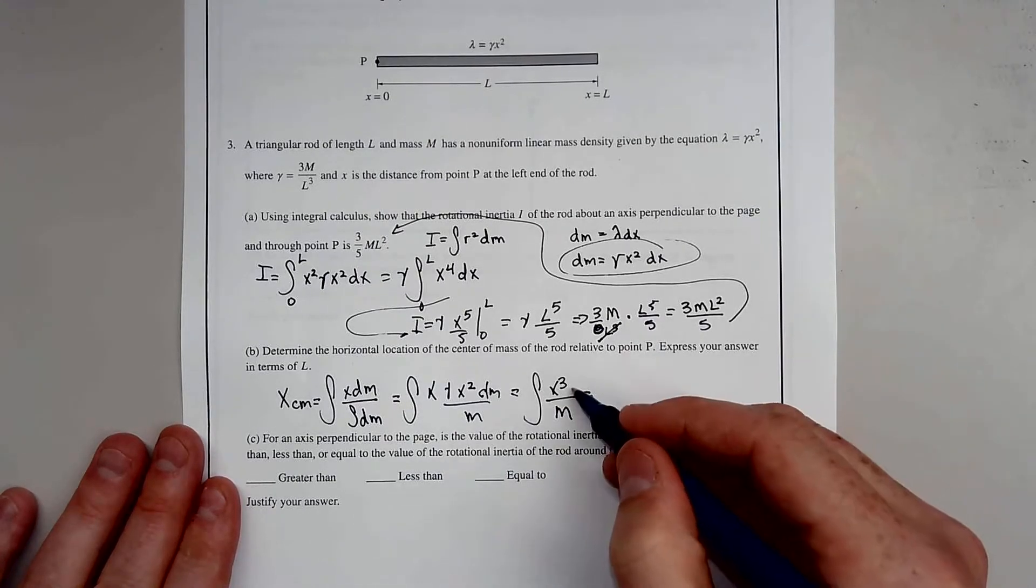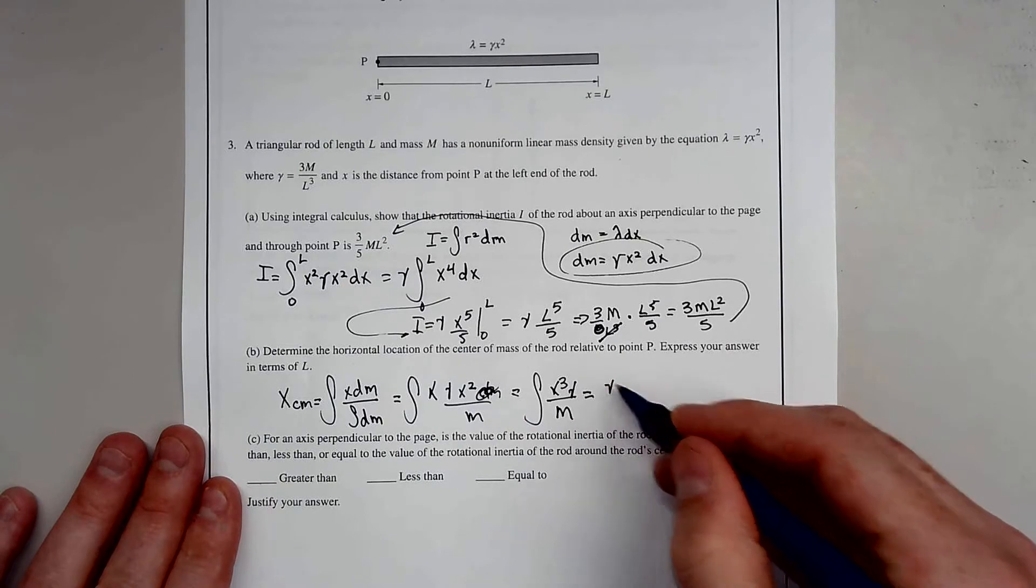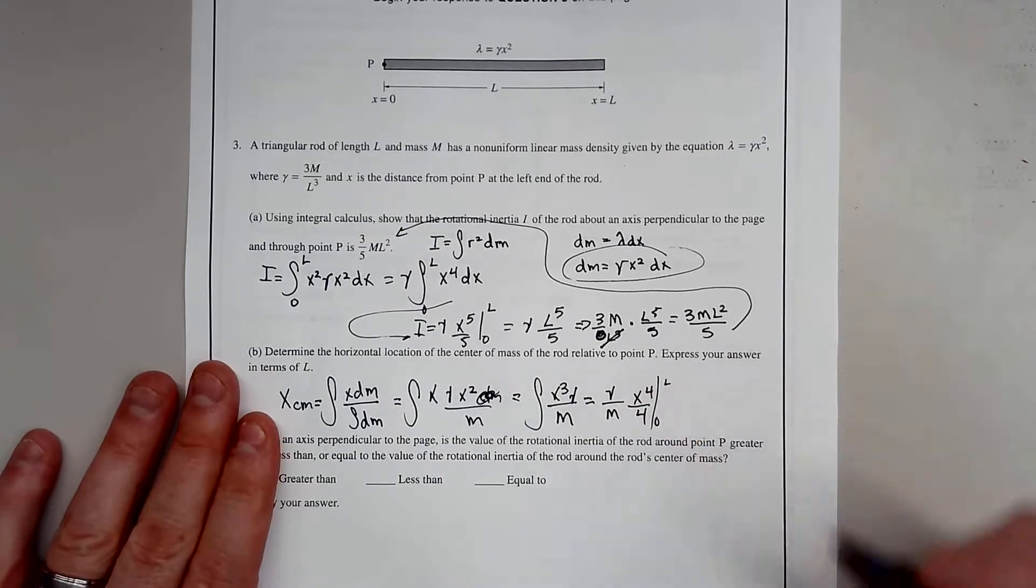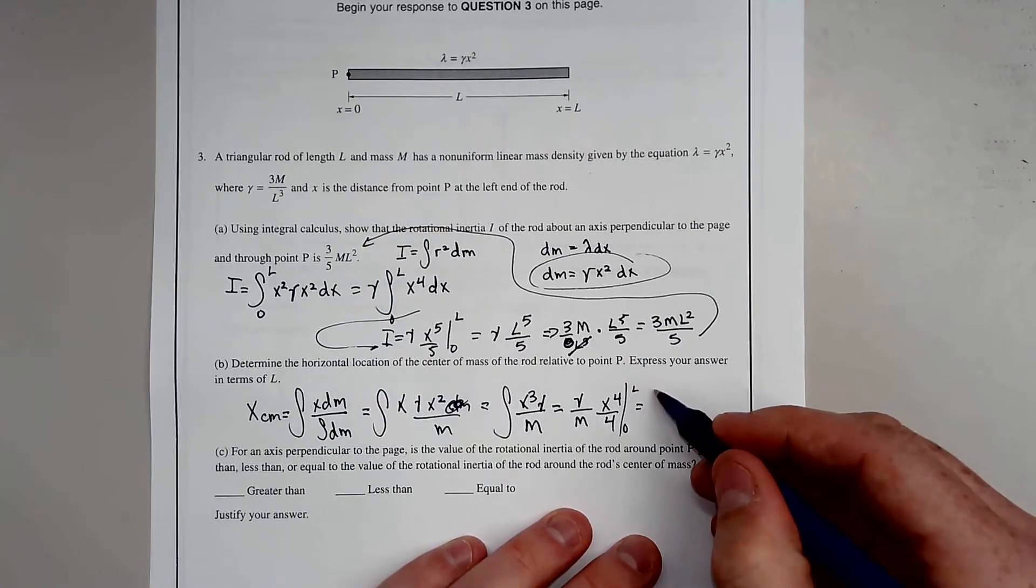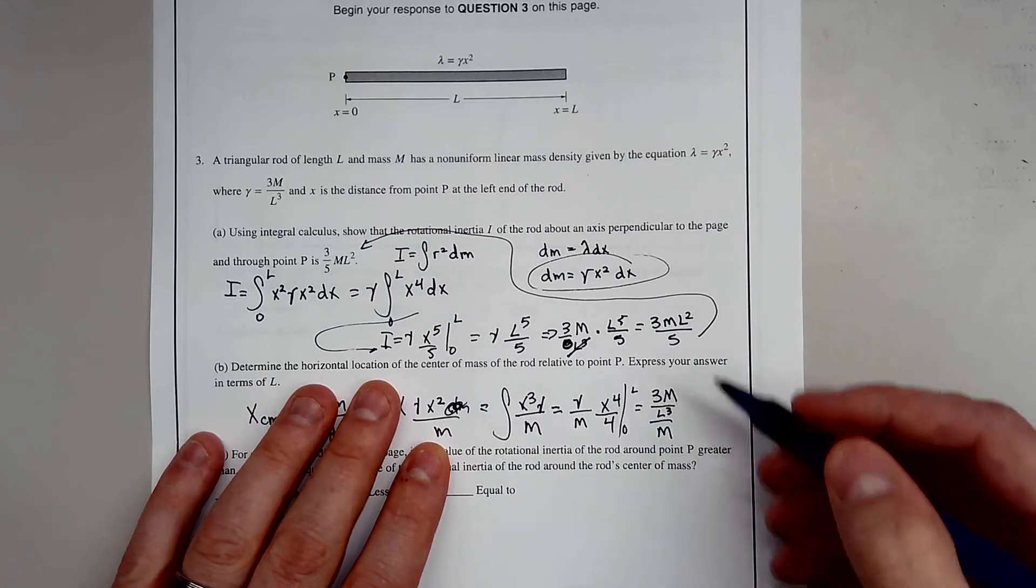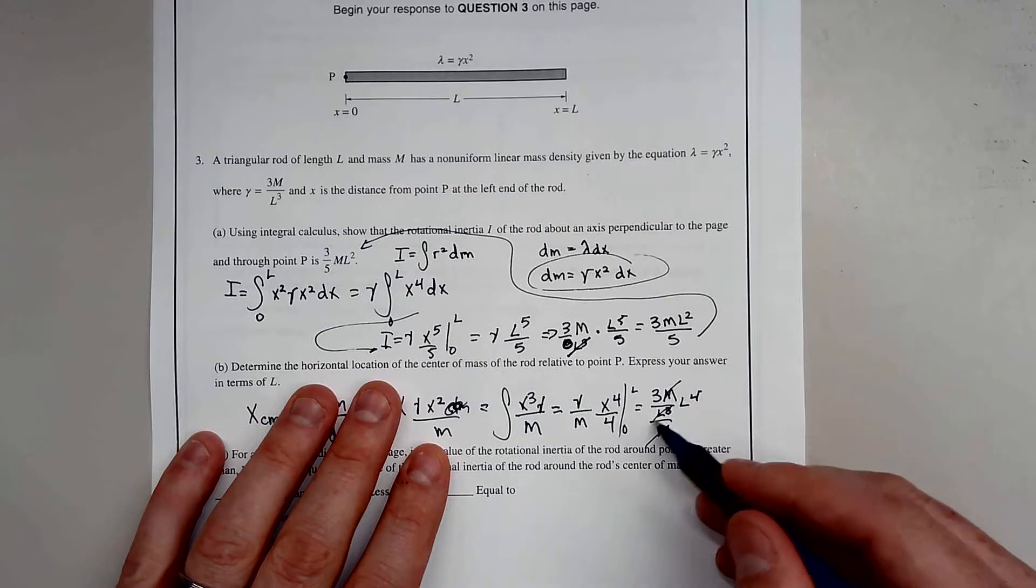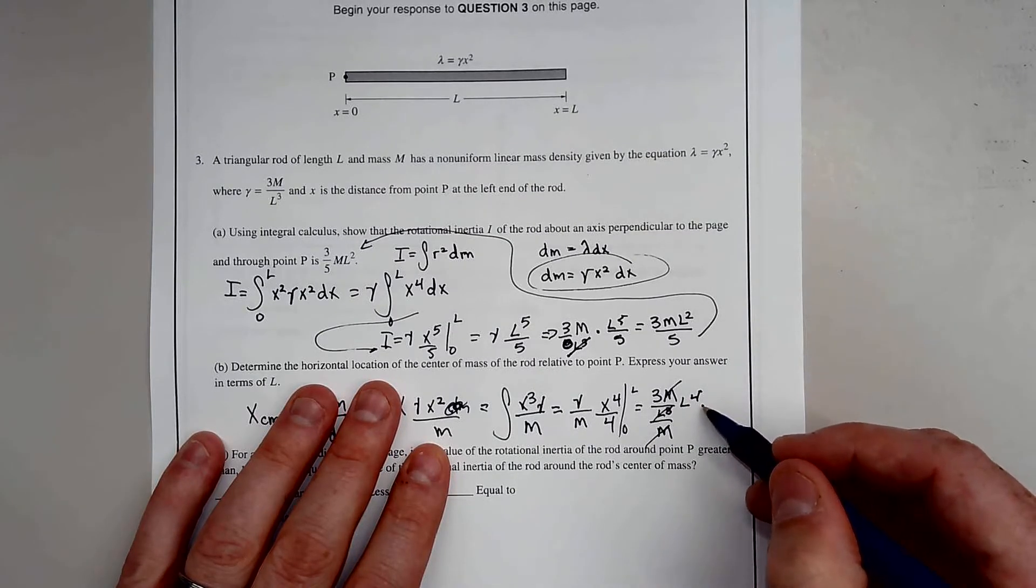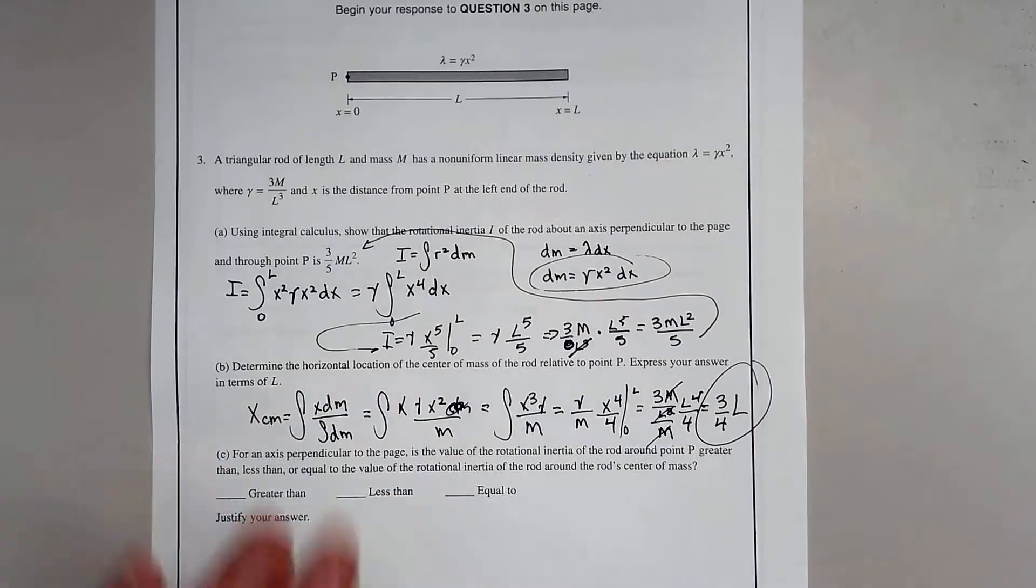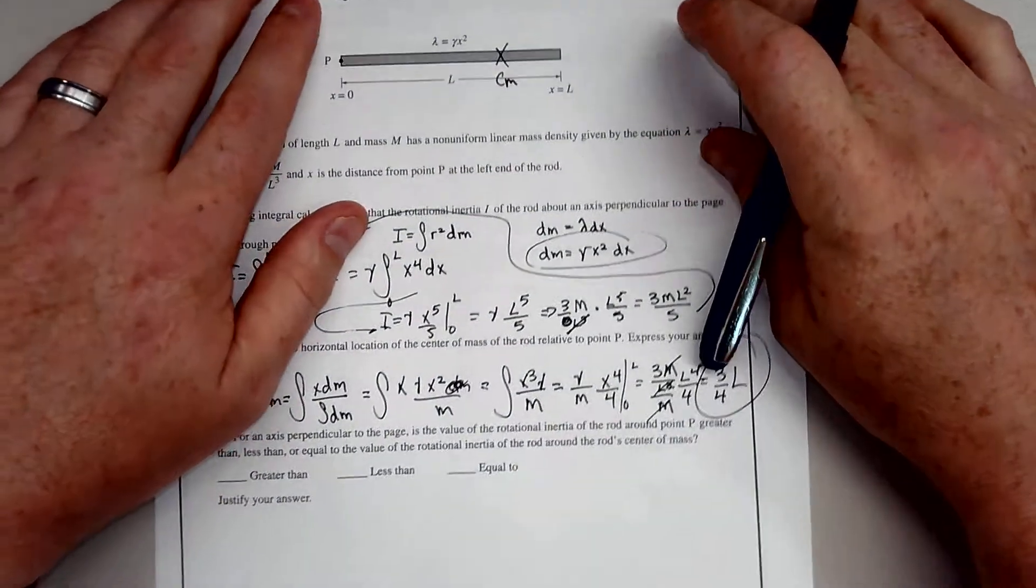This equals gamma over M times X to the fourth over 4 from 0 to L. Plugging in, we get 3M over L cubed divided by M times L to the fourth over 4. The M's cancel and one L cubed cancels with the L to the fourth, giving us 3L over 4. So the center of mass is at three-fourths L from point P.